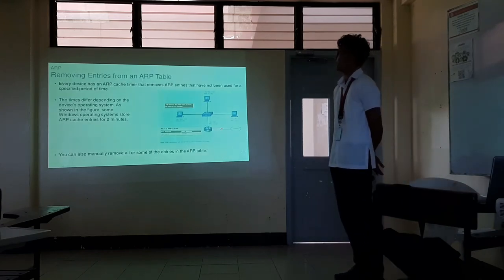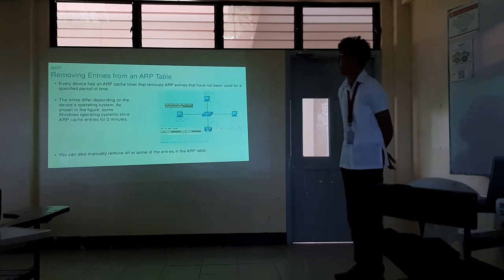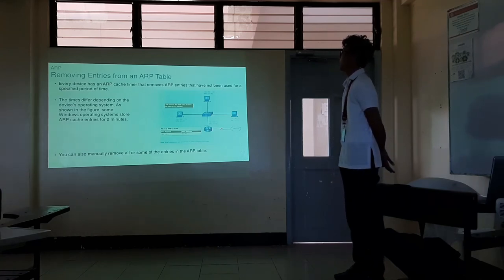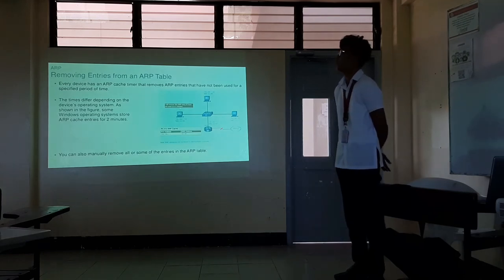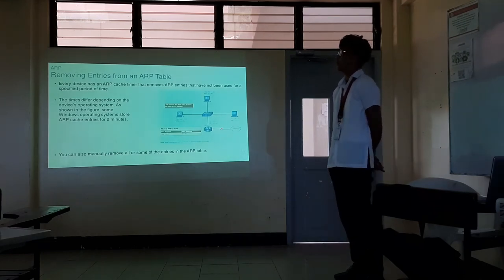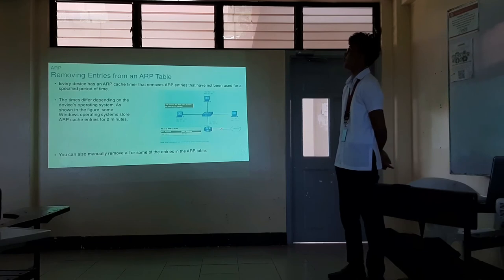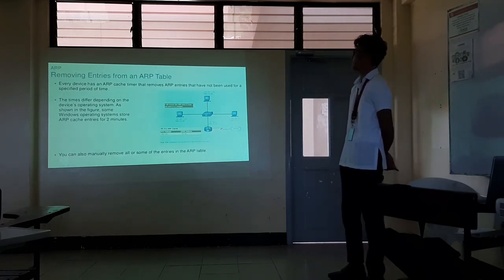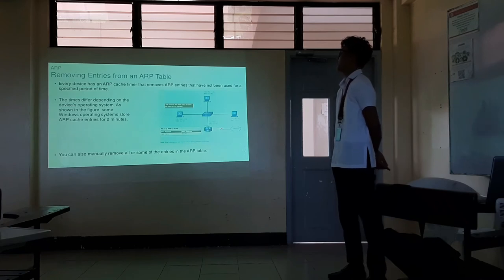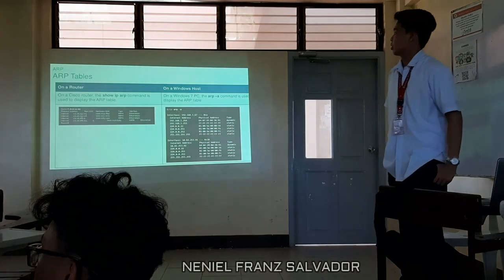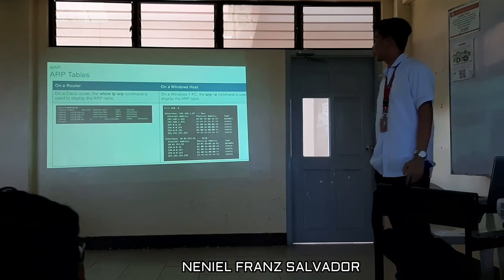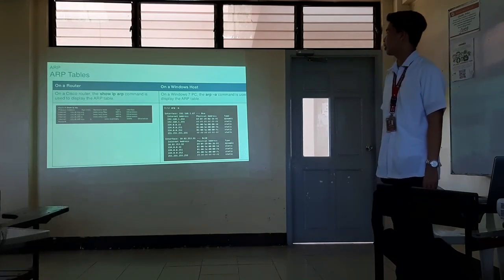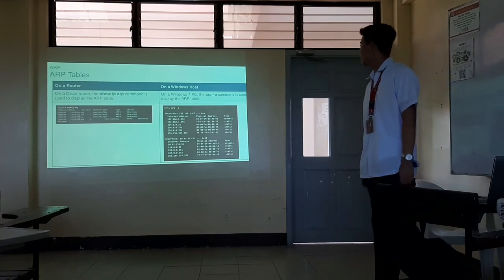Removing entries from the ARP table: every device has an ARP cache timer that removes ARP entries that have not been used for a specified period of time. The timer varies depending on the device's operating system. For example, some Windows operating systems store ARP cache entries for 14 minutes. On a Cisco router, the show ip arp command is used to display the ARP table.